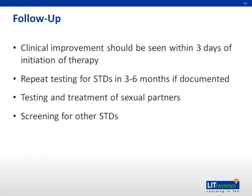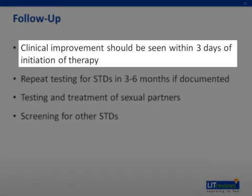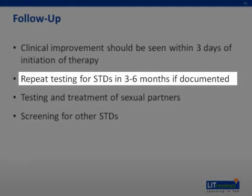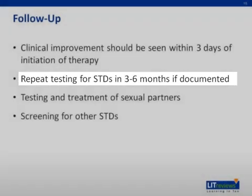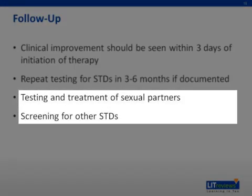Whether patients are treated as inpatients or outpatients, the patient should be followed closely, and clinical improvement should be seen within three days of initiation of therapy. Repeat testing and completion of screening for any sexually transmitted diseases within three to six months should be performed. Patients with pelvic inflammatory disease are at high risk of recurrence. All patients diagnosed with gonorrhea and or chlamydia should also have testing and treatment of their sexual partners.